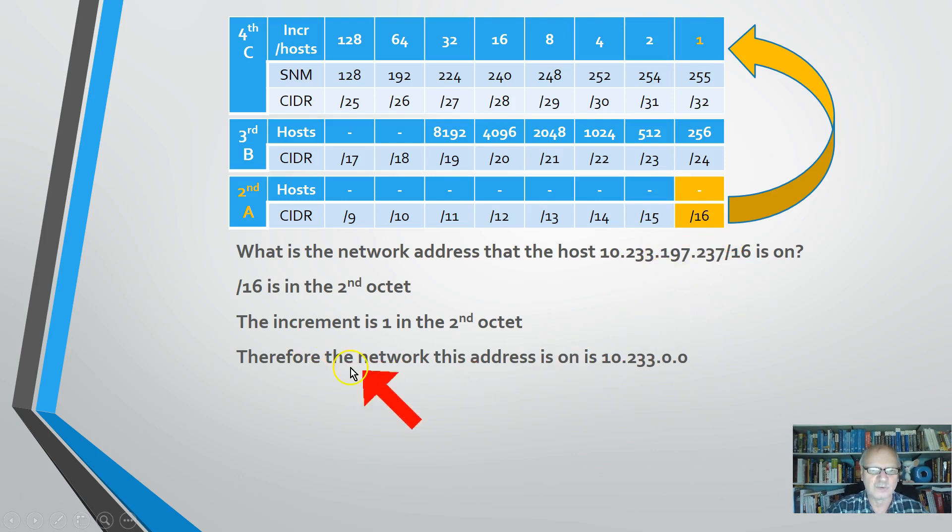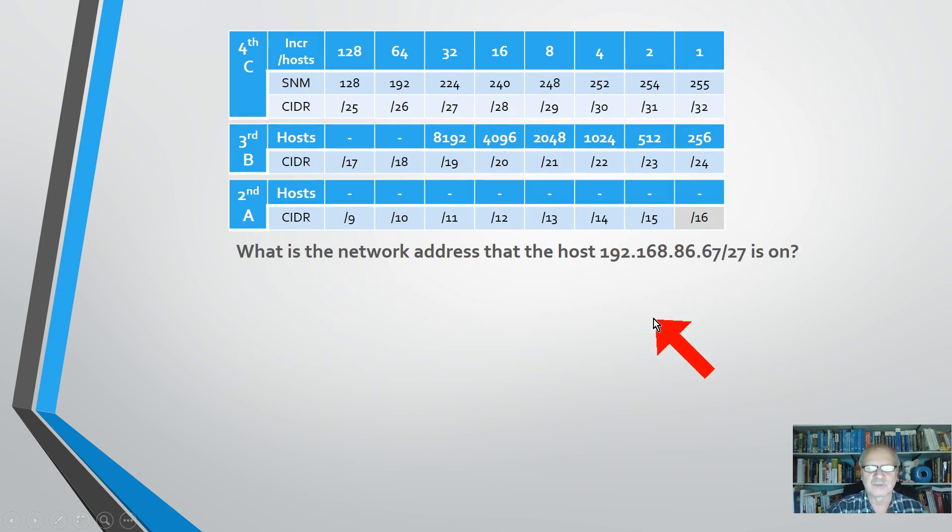So we know that the network address is 10.233.0.0 and we are host 197.237 on the 10.233 network. All right, that one was fairly simple. Let's take another one.